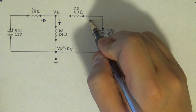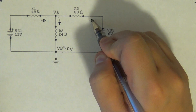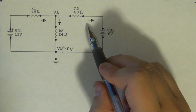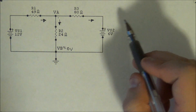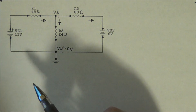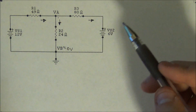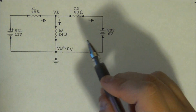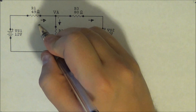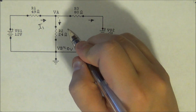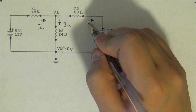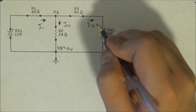Once again, these directions do not matter. The direction is going to simply be a guideline for your equation, but if you get a negative, you know that the current is going the opposite way from which you have selected. So let's name them I1, I2, and I3.